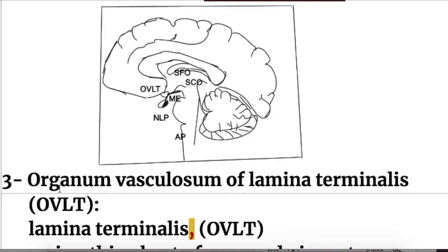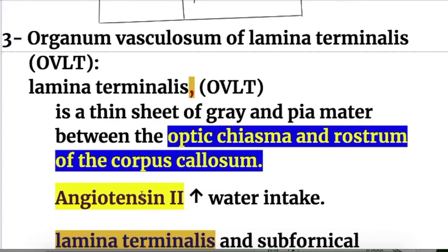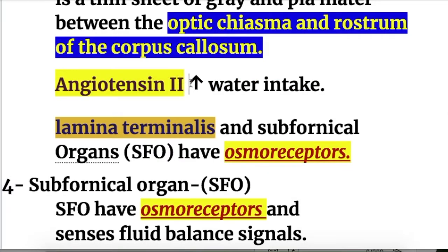Number three is the organ vasculosum of the lamina terminalis, or OVLT. The lamina terminalis is a thin sheet of gray matter and pia mater between the optic chiasma — where the optic nerve crosses above the pituitary gland — upward to the rostrum of the corpus callosum. The function of OVLT is to increase angiotensin and increase water intake. It has osmoreceptors sensitive to fluid and salt.